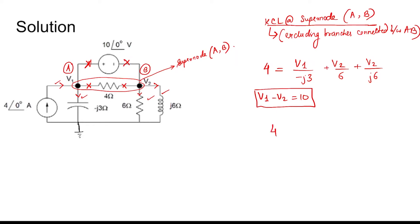So v1 can be written down from this equation and putting the value of this equation in this equation. v1 can be written as 10 plus v2 divided by minus j3 plus v2 by 6 plus v2 by j6.